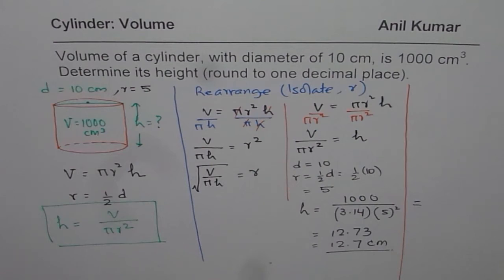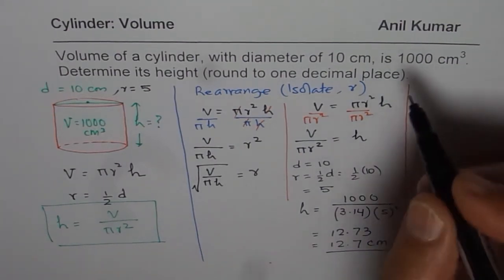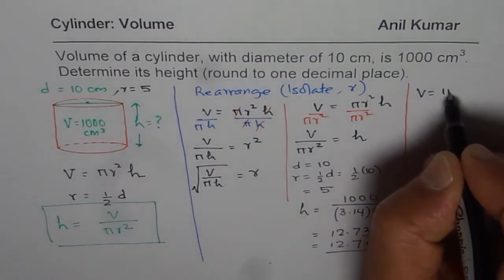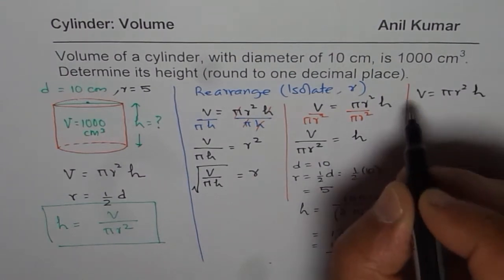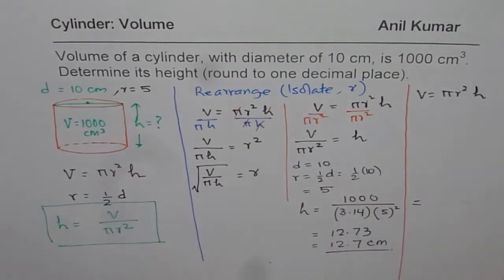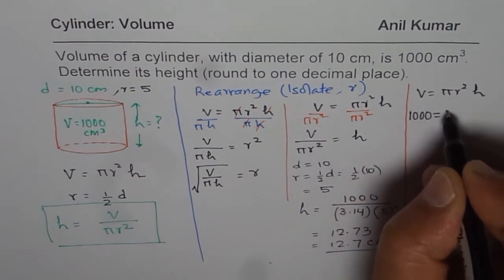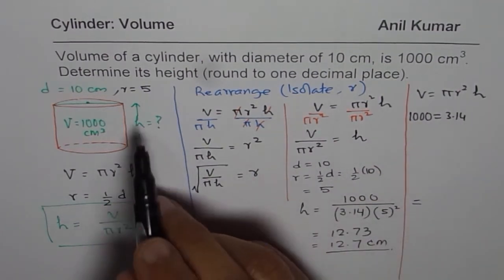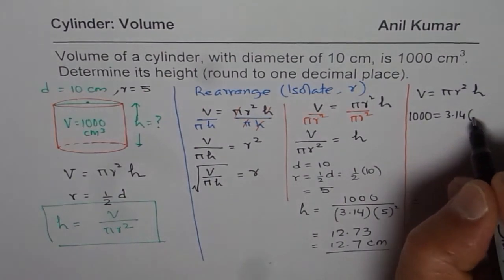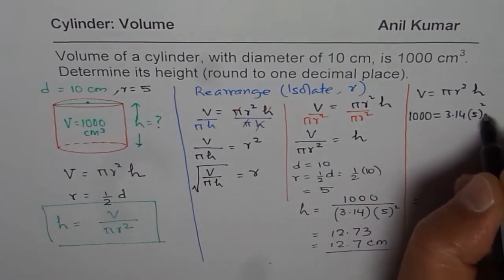Well, for some of you rearranging may be a difficult task. So you can straight away apply the formula and solve. Volume is πr²h. In our case, volume is 1000, so 1000 = 3.14 × 5² × h.